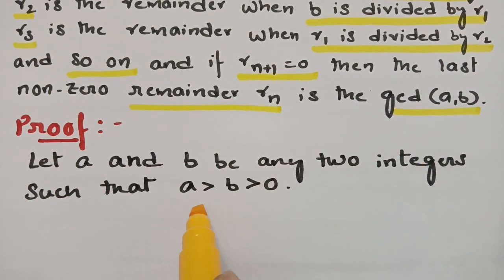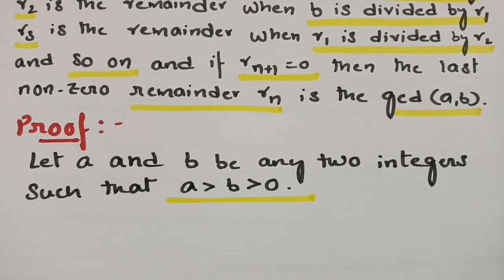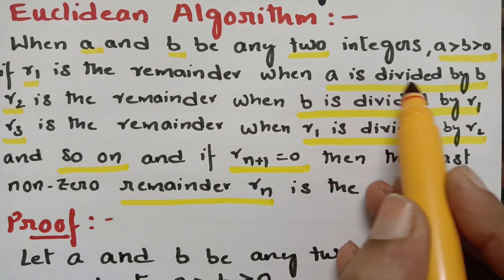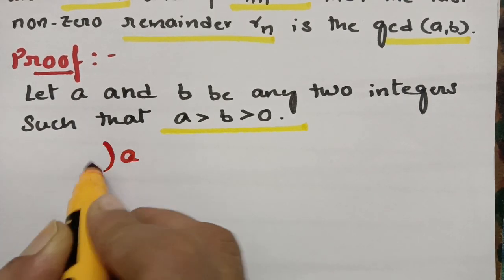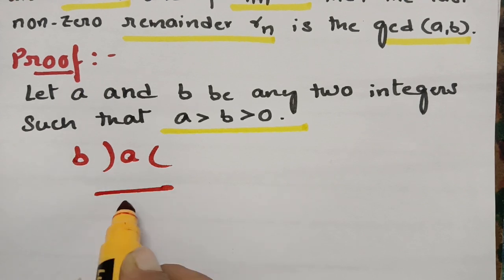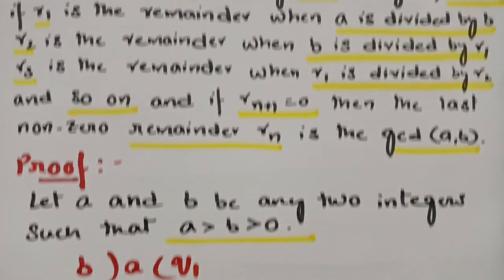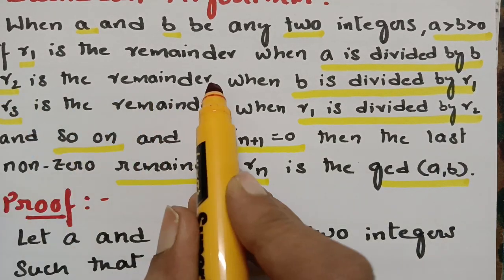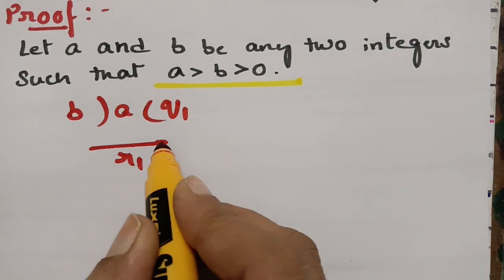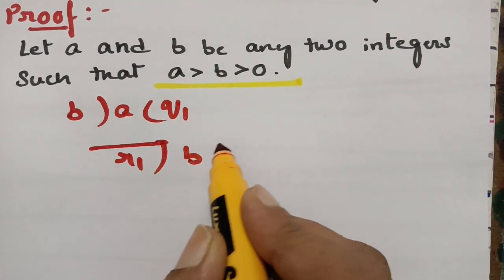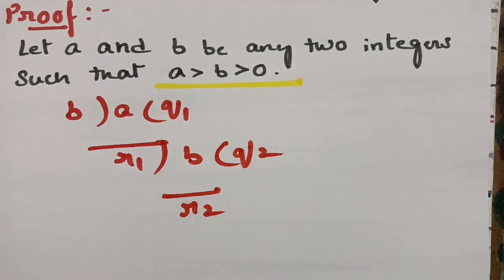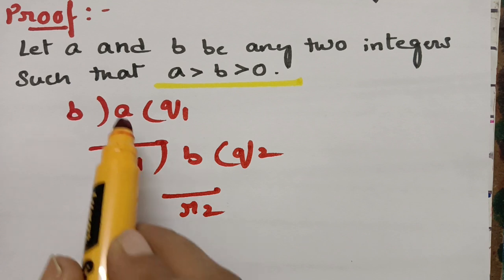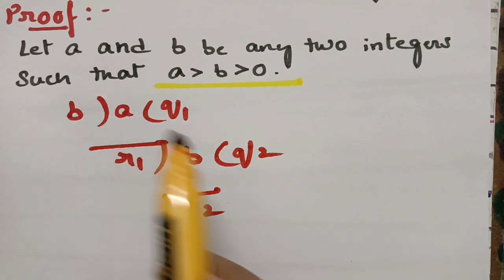Proof. Let A and B be any two positive integers. R1 is the remainder when A is divided by B — so when A is divided by B, R1 is the remainder and the quotient is Q1. R2 is the remainder when B is divided by R1, with Q2 as the quotient.